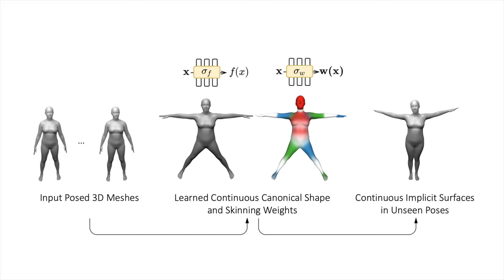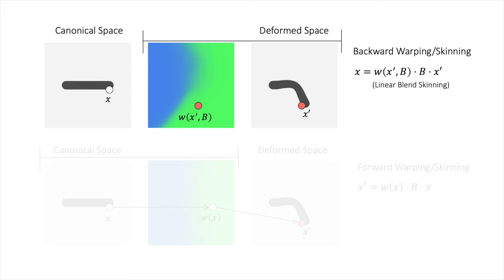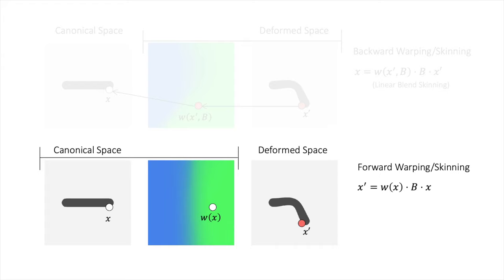But how can we deform a continuous function in a differentiable way? Existing methods use backward skinning and learn a weight field conditioned on the deformed point and the object pose. In contrast, in this work, we propose a forward skinning model that learns a weight field conditioned on the corresponding point in canonical space.